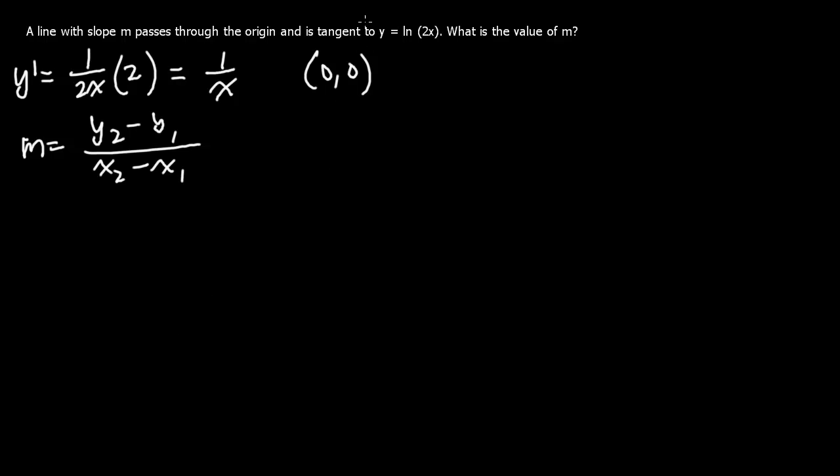So we have y, which is ln 2x minus 0, because it passes through the origin, so it's 0, over x minus 0. And we need to set it equal to 1 over x.